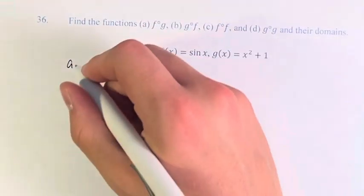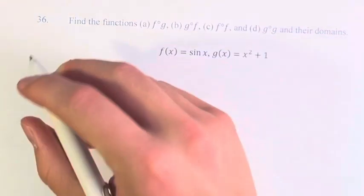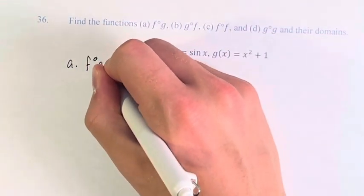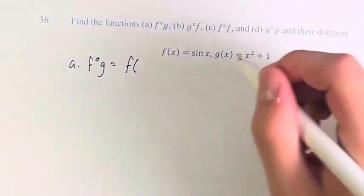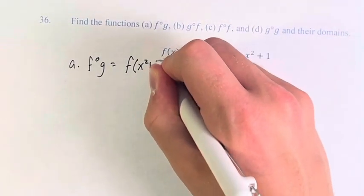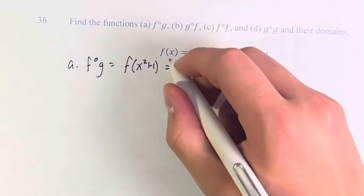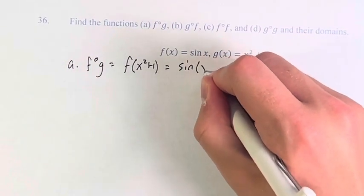So here, we have f of g. This is going to be f of g of x, which is x squared plus 1. Therefore, this is sine of x squared plus 1.